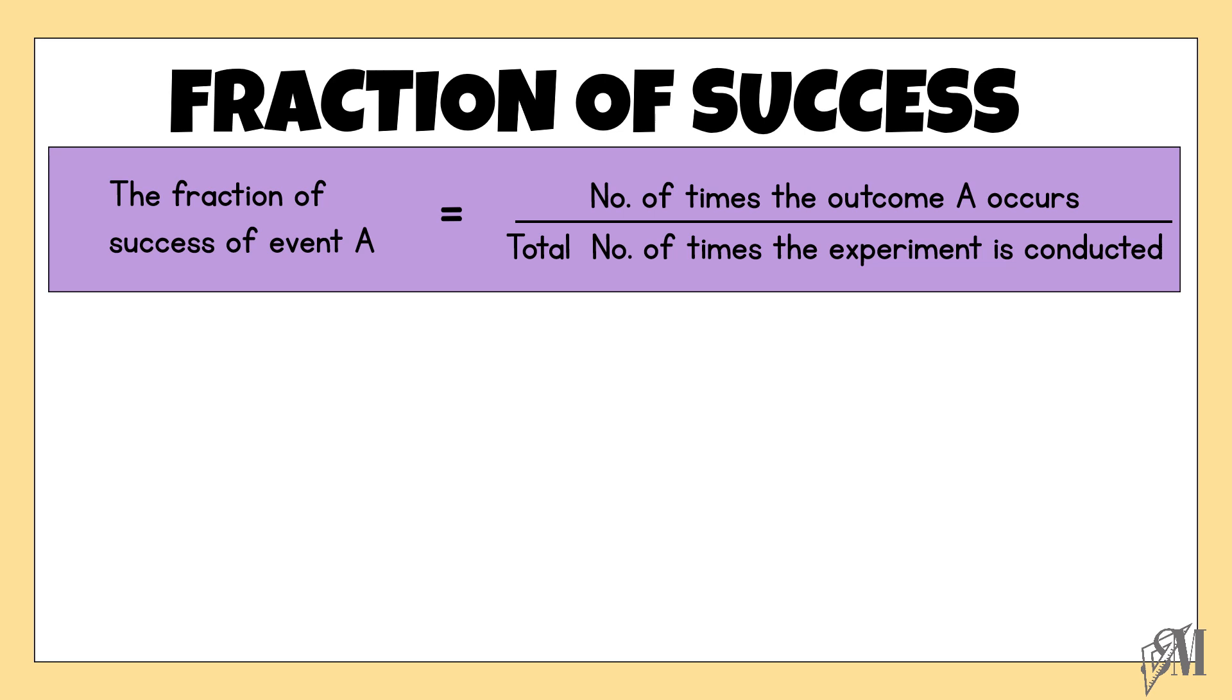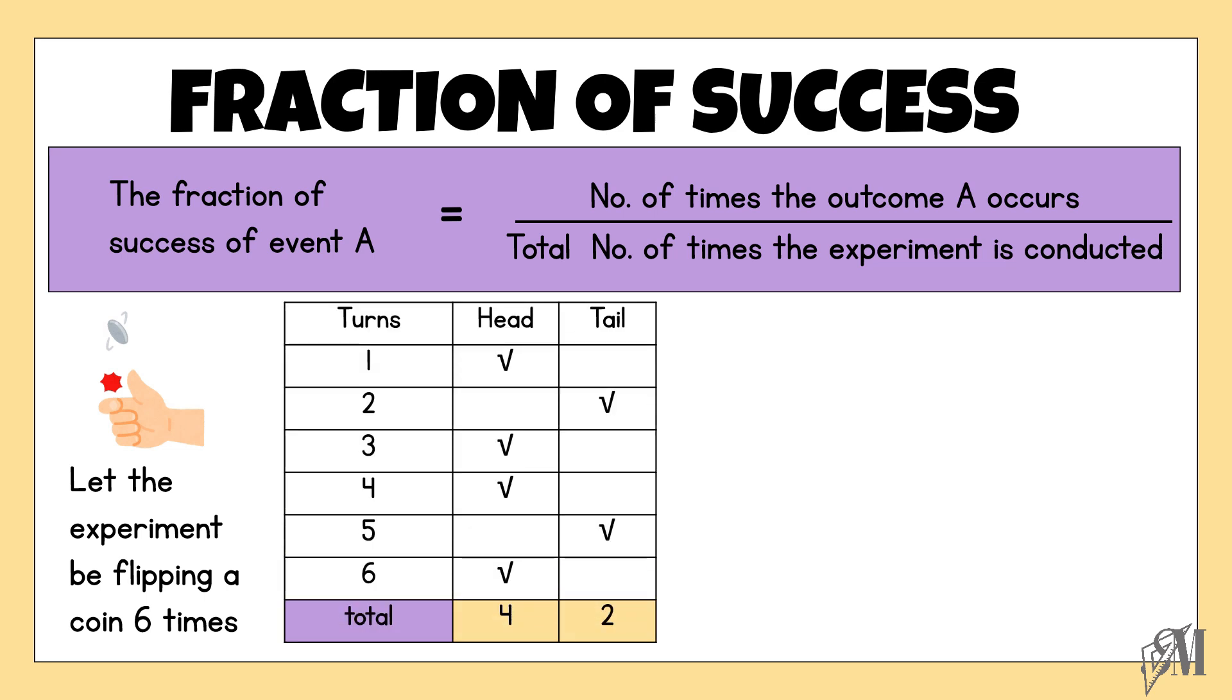Let us understand this through an example. Let our experiment be flipping a coin and we repeat this for 6 times. In the first turn we got the head, second turn we got the tail, and likewise. When all 6 times the coin is flipped, we have got 4 heads up and 2 tails up.